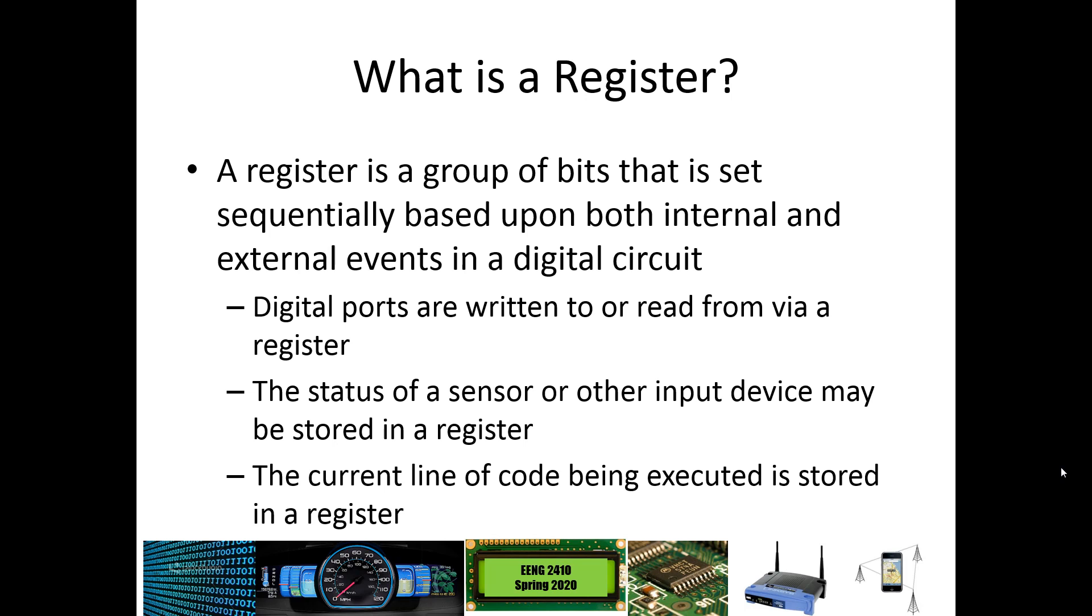A register is a group of bits and that group of bits can be set sequentially based upon things like the code that you have written. So as one line of code executes, it can change the value in a register. It can take a register's contents and copy it from one place to another. It can clear out a register. And that is done sequentially. So lines of code are executed one after the other after the other. And they can be changed based on both internal and external events. Internal events might be the execution of code, other things that have happened internally. Maybe you have some kind of calculation. Maybe you have some kind of logical operation that you've executed.